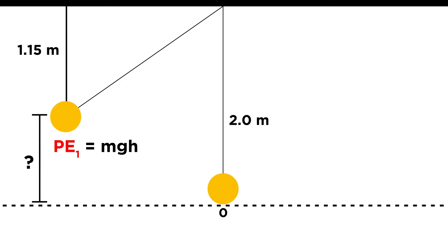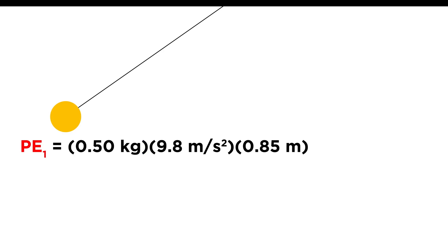Now that we have this distance, it is easy to get the height from the lowest point, because when vertical, this length is two meters. So this length must be two meters minus one point one five meters, or zero point eight five meters. So there is our h, and we have m and g, zero point five kilograms, nine point eight meters per second squared, and zero point eight five meters. That will give us four point one seven joules.